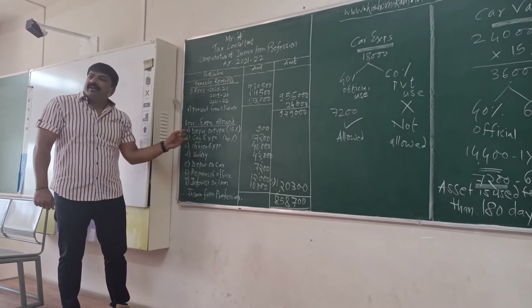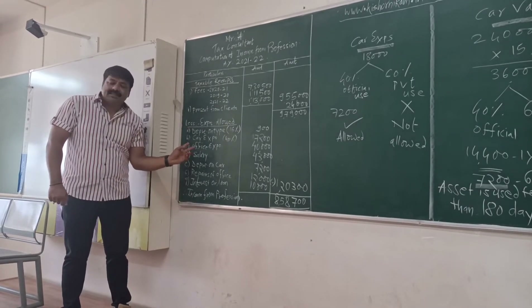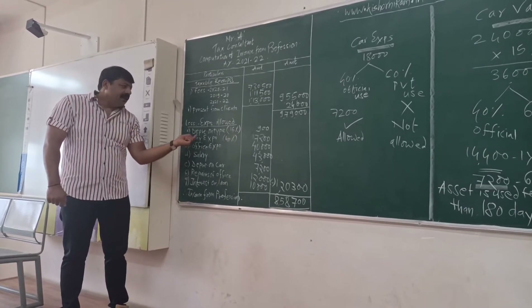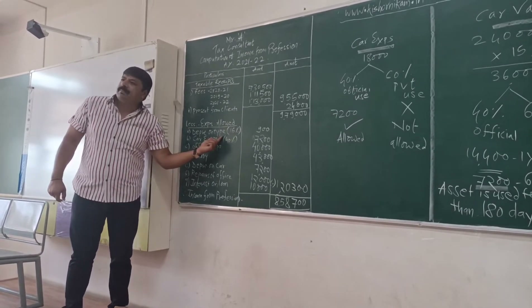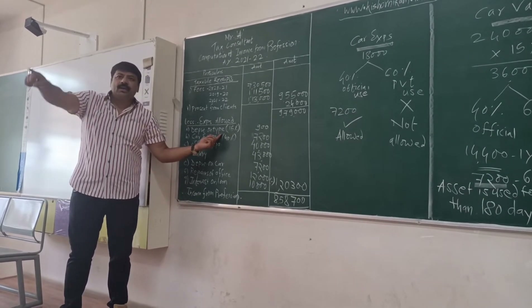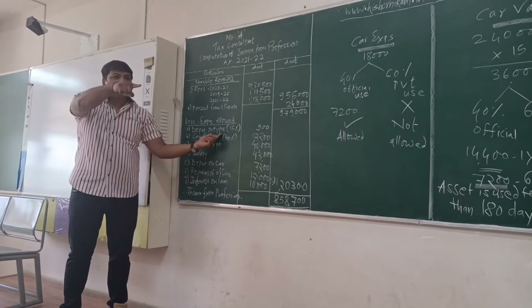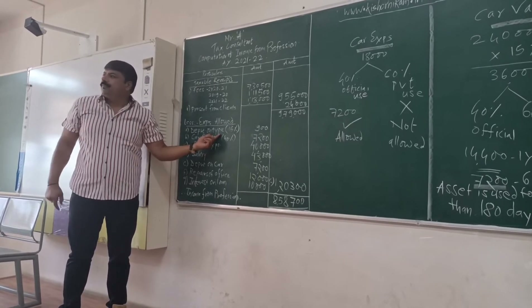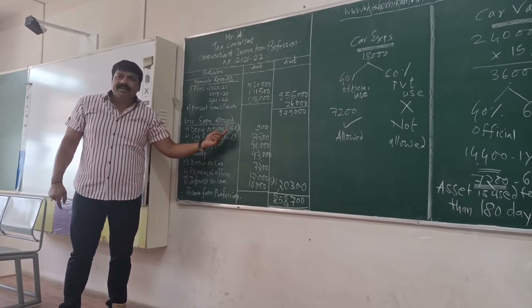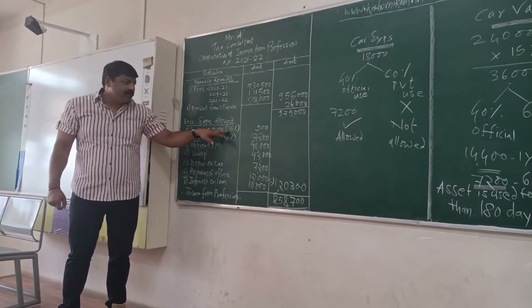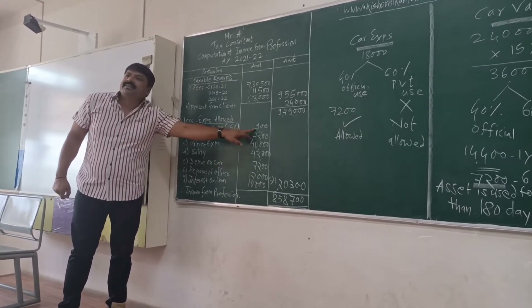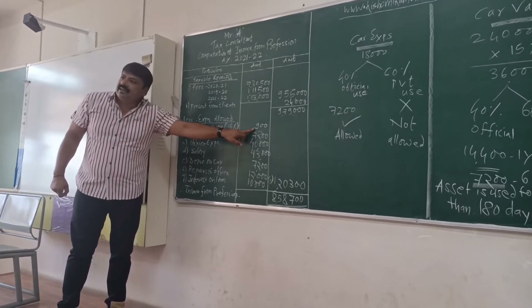Less allowable expenses: depreciation on typewriter — the rate of depreciation given to allow is 15%. So 6,000 into 15% equals 900.